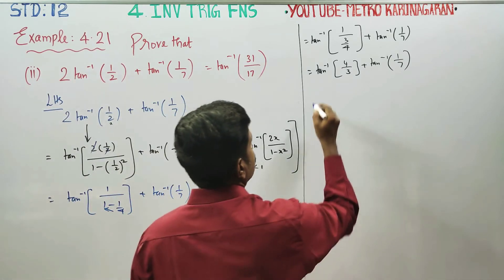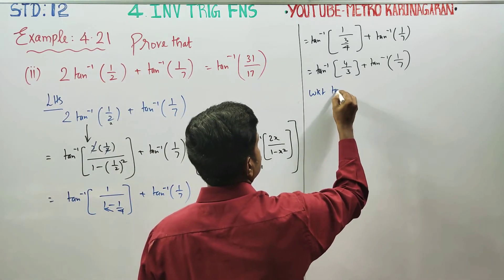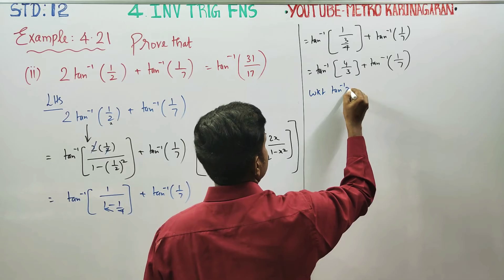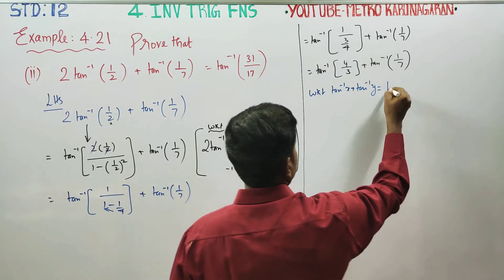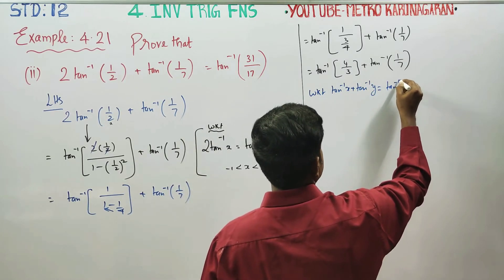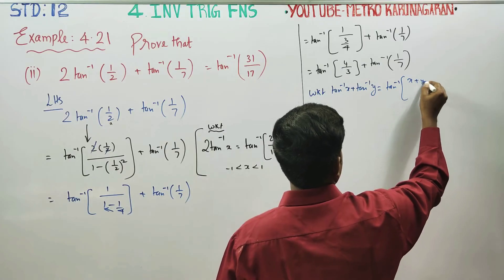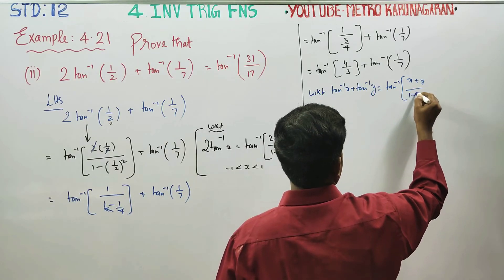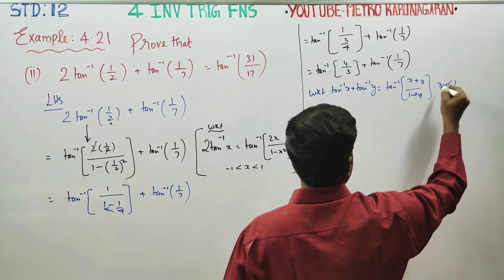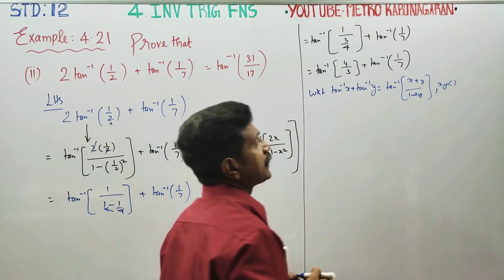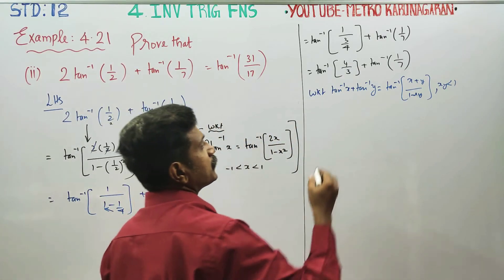We know that tan⁻¹(x) + tan⁻¹(y) = tan⁻¹((x + y) / (1 - xy)), provided that xy < 1. Here x = 4/3 and y = 1/7, and we verify that xy < 1.